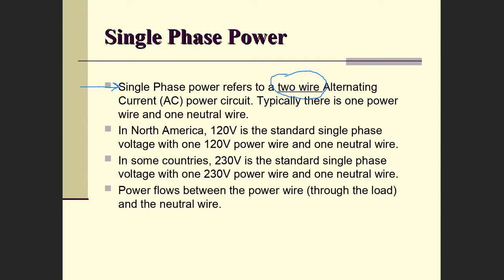With this single-phase, two-wire physical configuration, we typically have one power wire and one neutral wire. In North America, what we're really talking about is providing 120 volts. This is the standard single-phase voltage that is supplied in North America between a single power wire and a neutral wire.